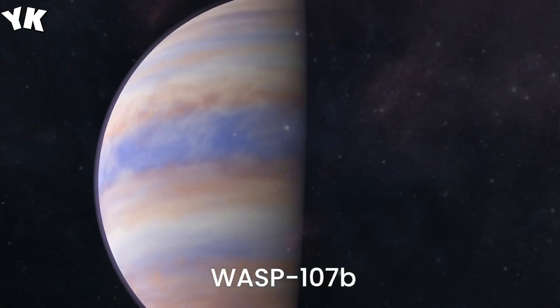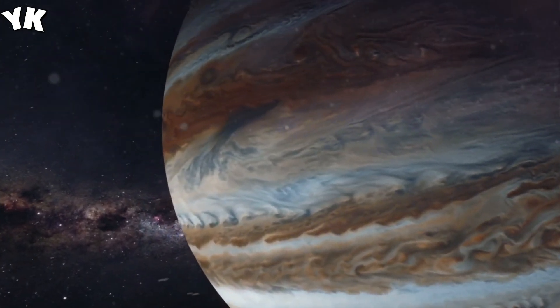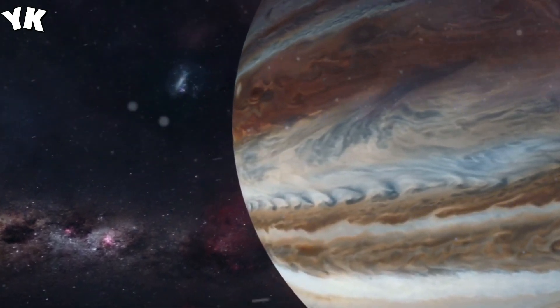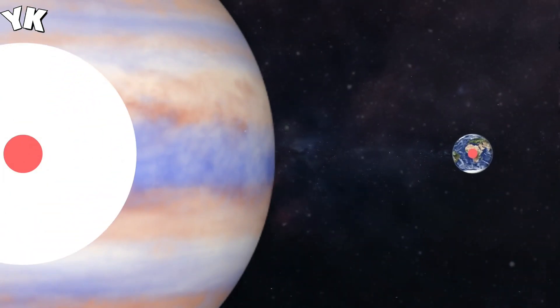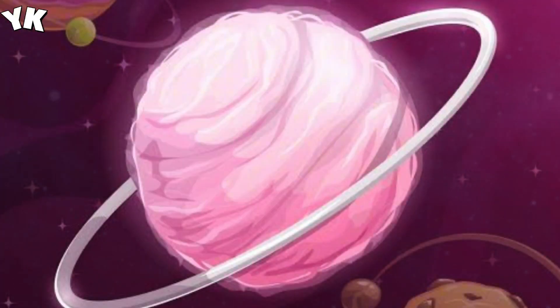WASP-107b, the cotton candy planet. Next up, we have WASP-107b, a gas giant with the density of cotton candy. Despite its size, it's remarkably lightweight, challenging our understanding of gas giant formation. Picture a marshmallow-like planet floating in space.